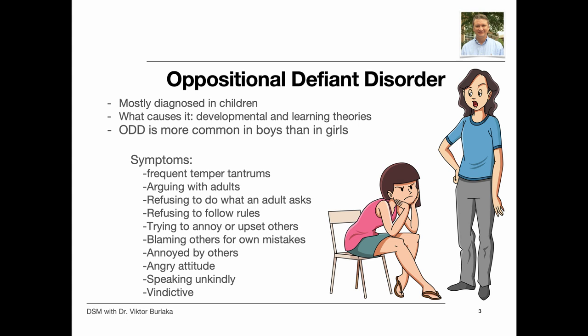Many children tend to disobey or argue with parents, and may often behave this way when they are tired, hungry, or upset. But in children and teens with ODD, these symptoms happen more often. They also interfere with children's learning and school adjustment, and in some cases disrupt the child's relationships with others.